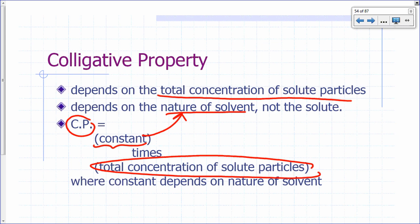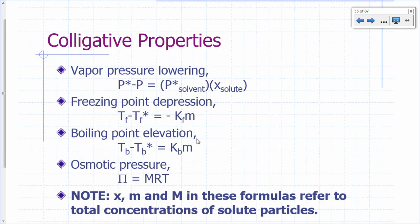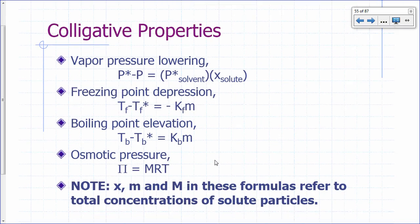As far as counting the particles: an ion counts as one particle, and a molecule counts as one particle. There are four colligative properties we're going to look at: vapor pressure lowering, freezing point depression, boiling point elevation, and osmotic pressure.